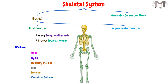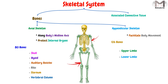The appendicular skeleton's main function is to facilitate body movement, and this type is made up of 126 bones in the following regions: the upper limbs, the lower limbs, the pelvic girdle, and the pectoral or shoulder girdle. With these two types, we have completed the first main component of the skeletal system, which is the bone.